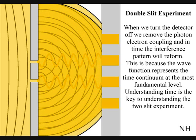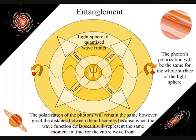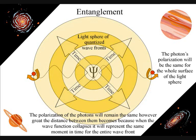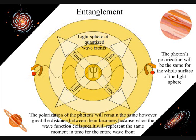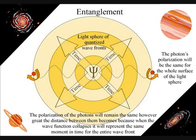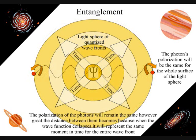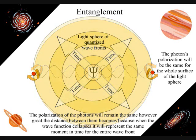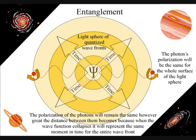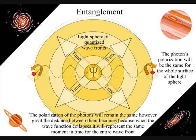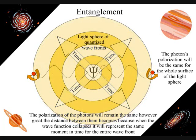However insane this sounds, it can explain all the paradoxes of quantum mechanics. We have entanglement because the polarization will be set at the creation of each expanding wave front. The wave front will expand as a quantum wave particle function in the form of a light sphere, and the polarization will remain the same for the entire surface of the light sphere, no matter how large it becomes.